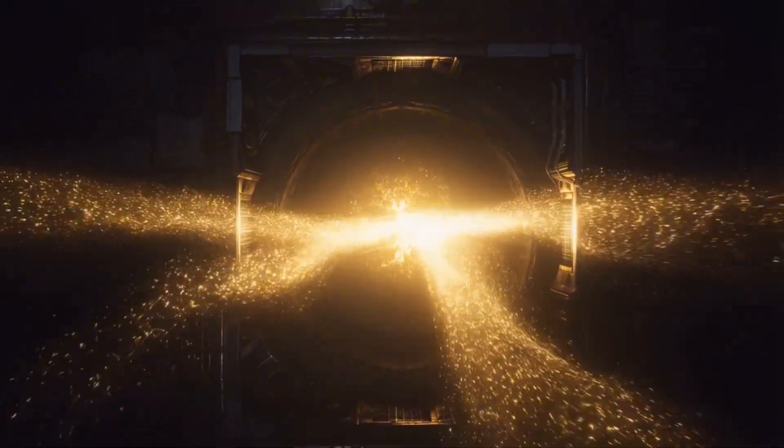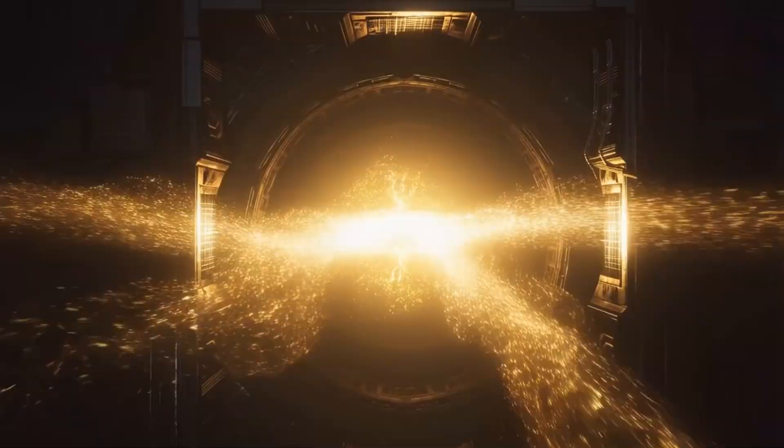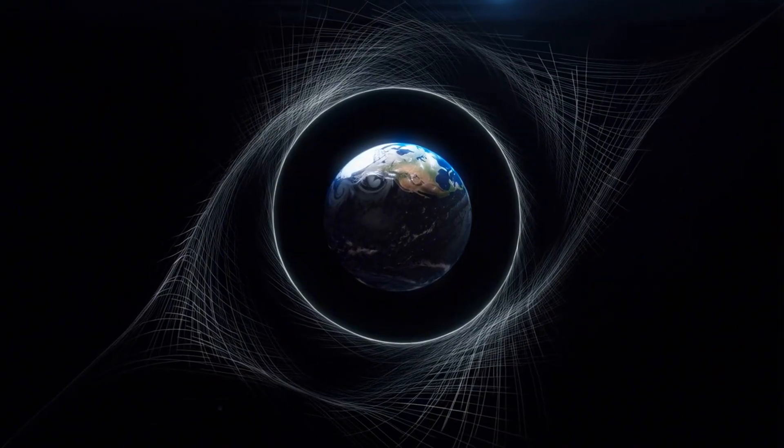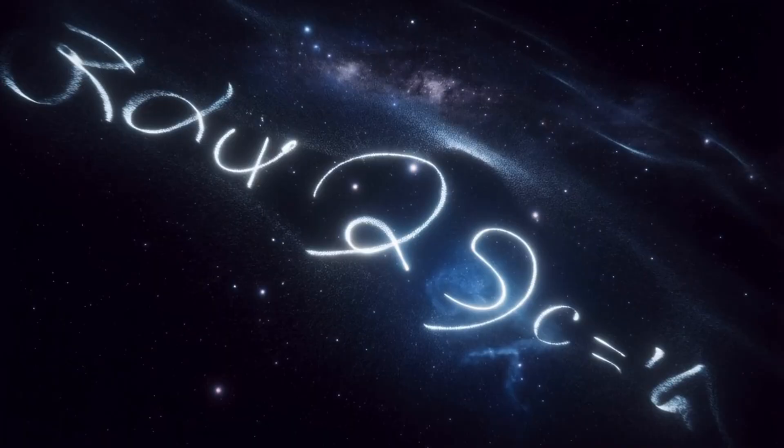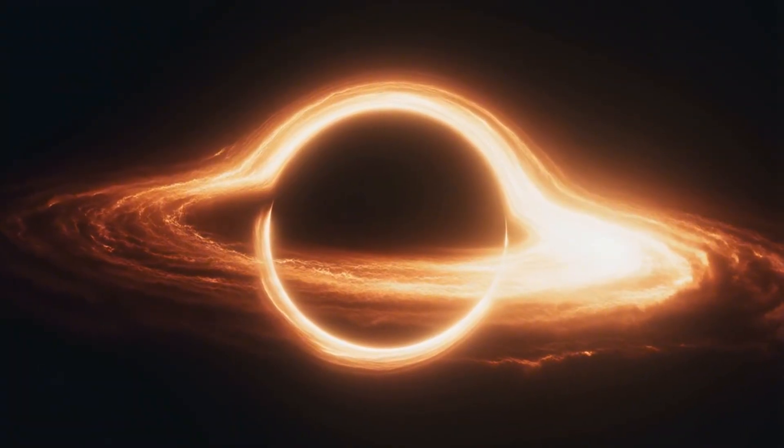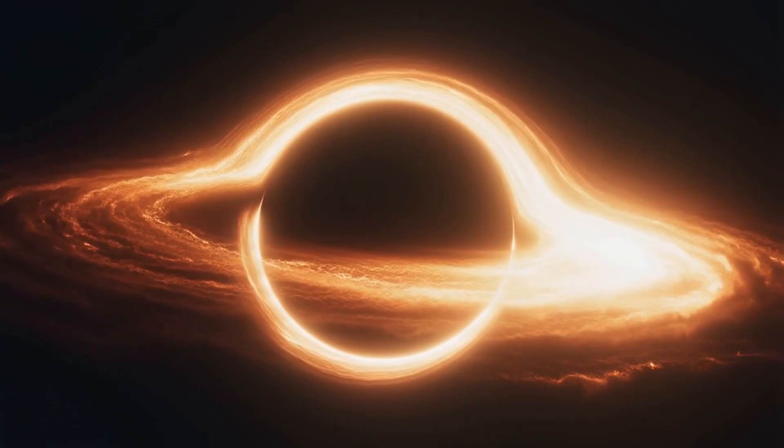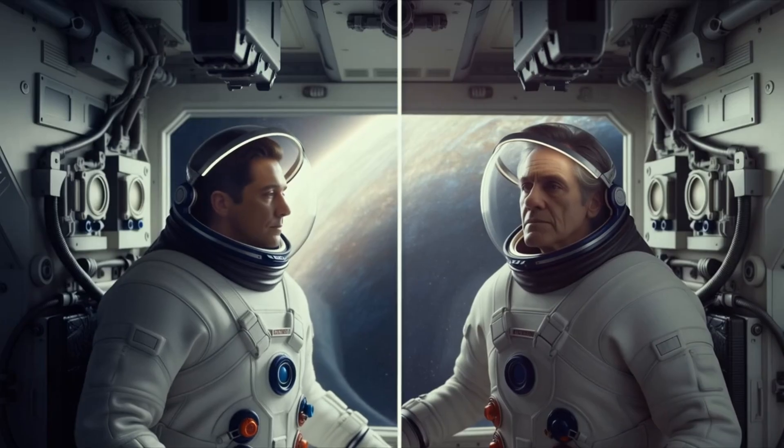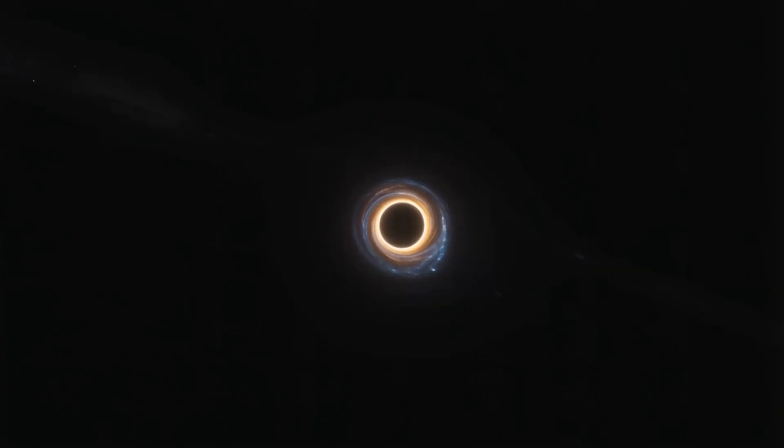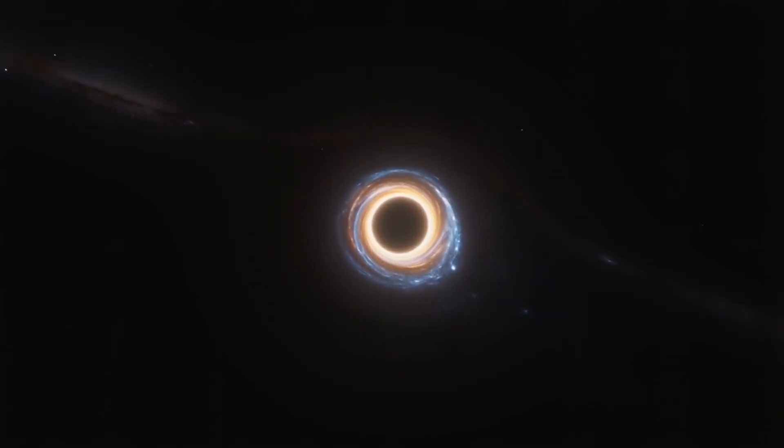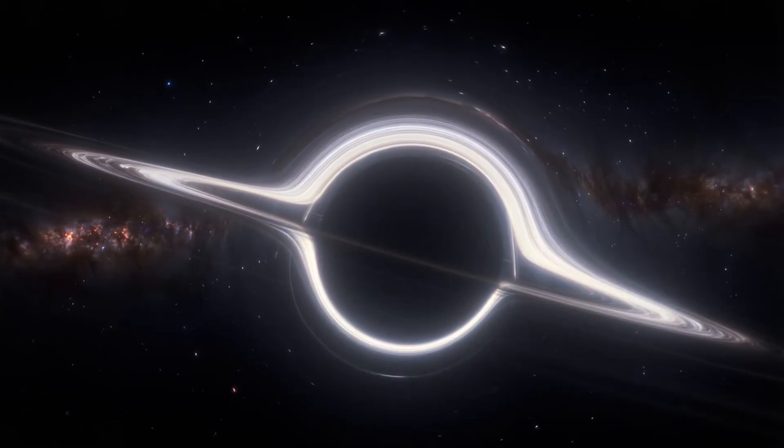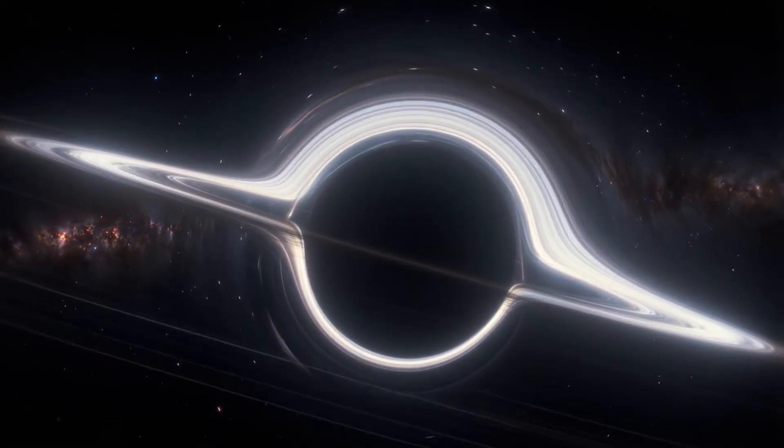And yet for all its vastness, the universe is still governed by elegant laws. Physics applies everywhere we look, from the orbit of planets to the expansion of galaxies. This harmony suggests something deeper, that the universe is not chaos but structure, not random but mathematical. Some researchers even speculate that what we're seeing, the order, the patterns, the constants, may be evidence of a designed system or a simulation. The further we zoom out, the more distant, cold, and mysterious it becomes, and yet the more beautiful. And now Earth, our home, is just a speck lost in a haze of billions of galaxies. From here it disappears completely. The universe becomes a single point of light, and then even that vanishes.